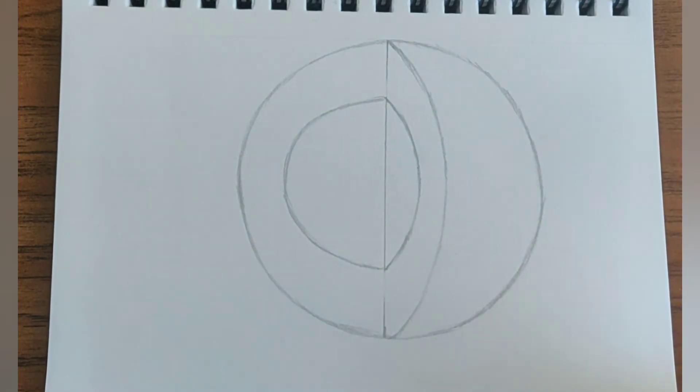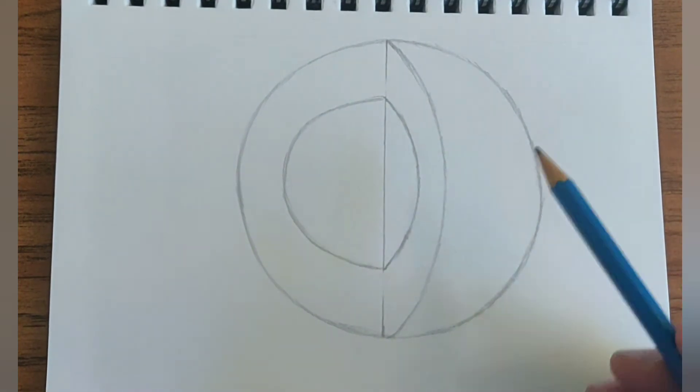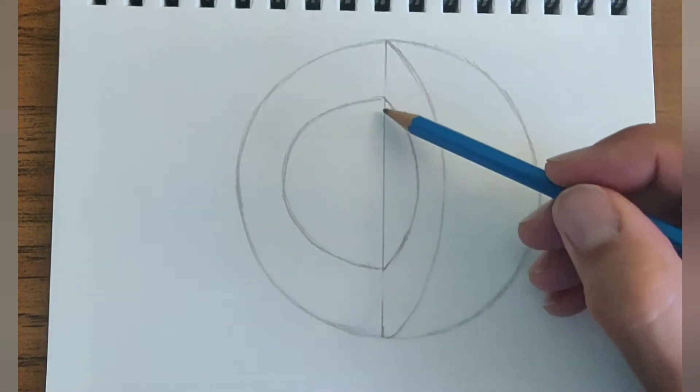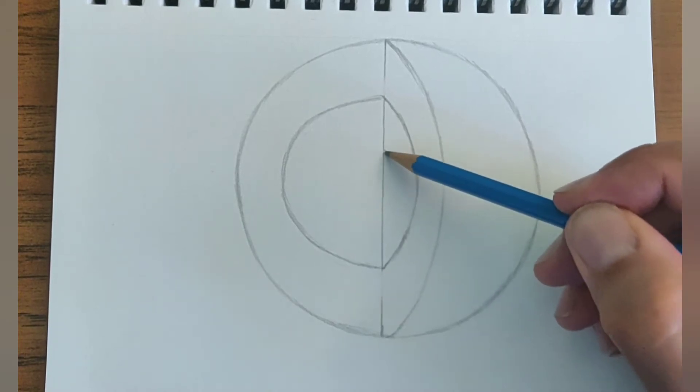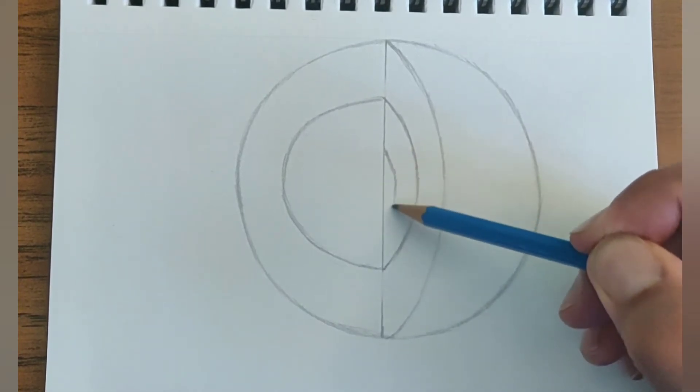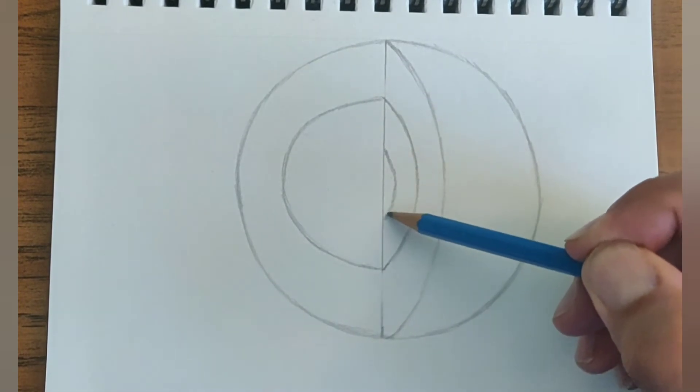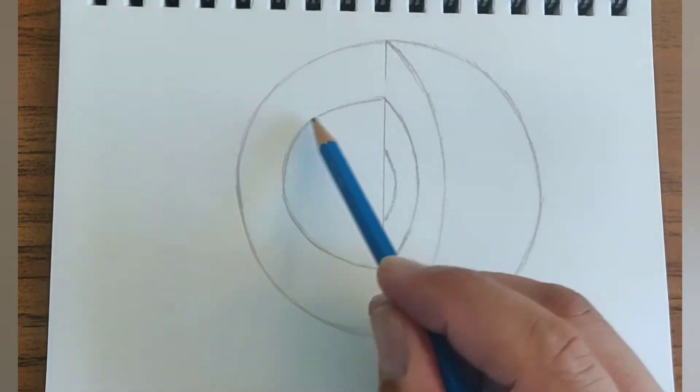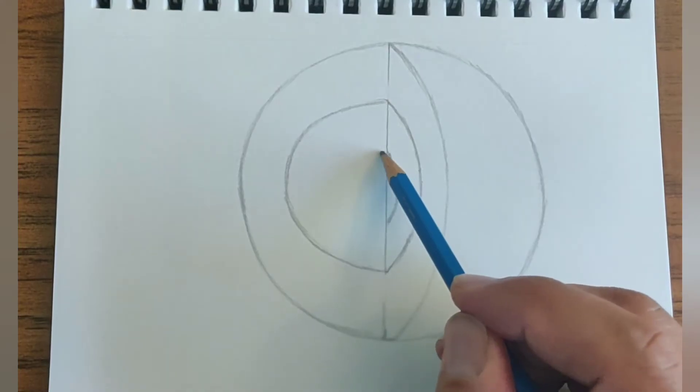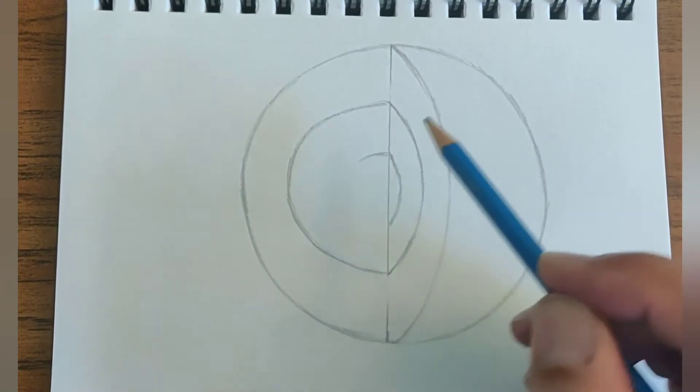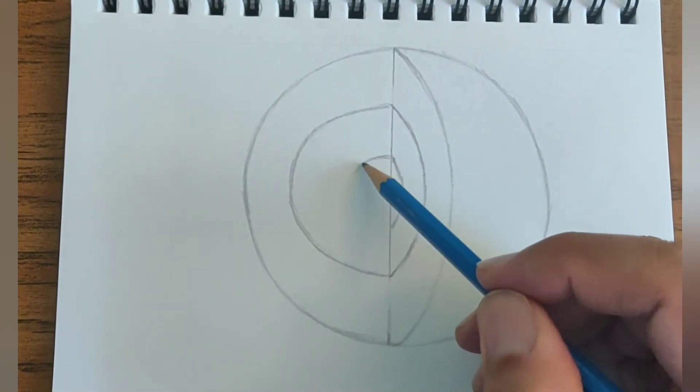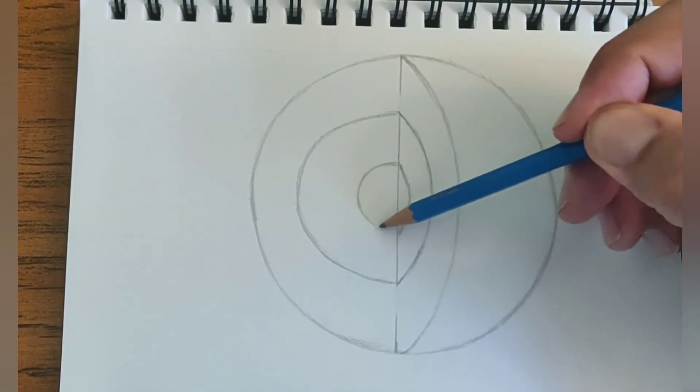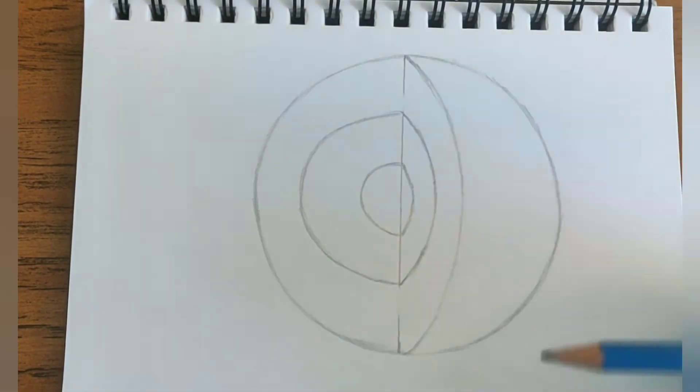And then we're going to make another curve inside here. Try to make it centered as you can. And this is also going to just curve out similar to the shape here, but a lot smaller. This is going to be the inner core here.